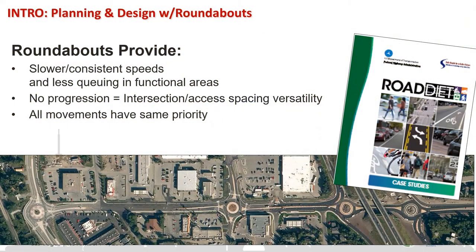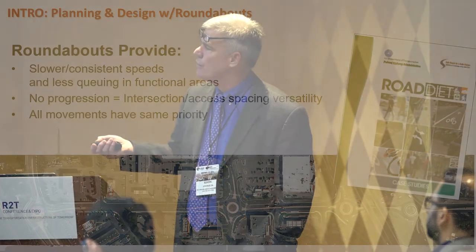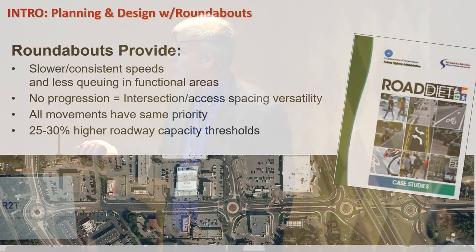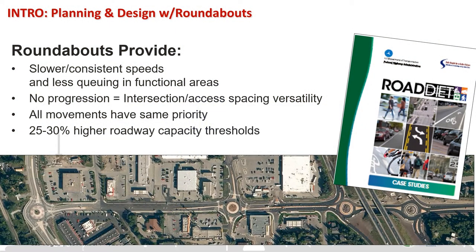An interesting point: all movements have the same priority at roundabouts. From an access management perspective, with signalized intersections the through movements more often than not have the priority — they get the least delay, lefts are going to have more delay. With roundabouts, it's the same priority whether you're making a U-turn, a right turn, or a through movement.